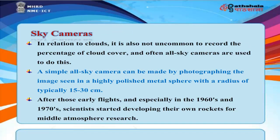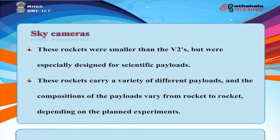Sky Cameras. It is not uncommon to record the percentage of cloud cover using all-sky cameras. A simple all-sky camera can be made by photographing the image seen in a highly polished metal sphere with a radius of typically 15 to 30 centimeters. After early flights, especially in the 1960s and 1970s, scientists started developing their own rockets for middle atmosphere research. These rockets were smaller than the V-2s but specially designed for scientific payloads, carrying a variety of different payload compositions depending on the planned experiments.